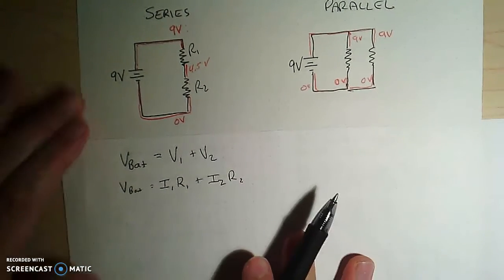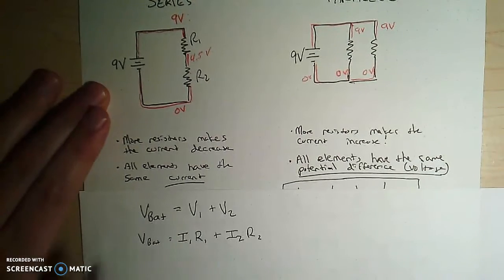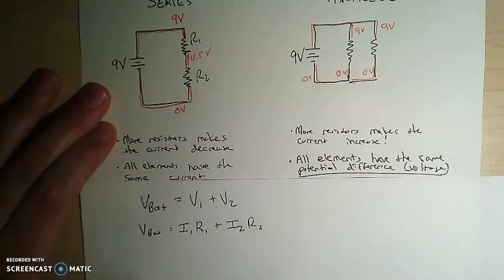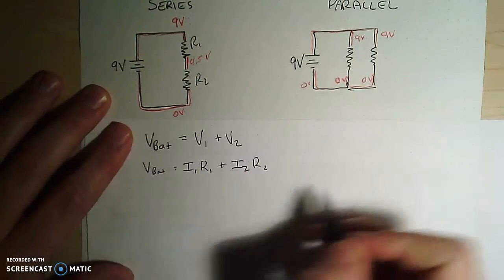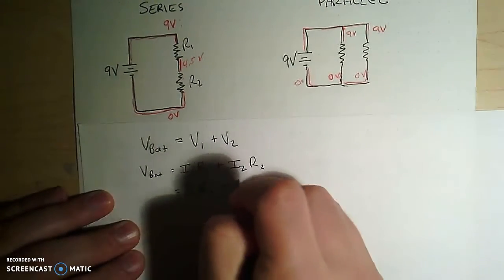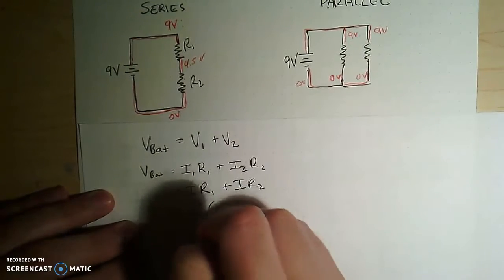But we also know that in a series circuit all elements have the same current because you can't have a traffic jam with a current in here, right? And so instead of calling these I1 and I2, I can just call them I and then I can factor out the I.